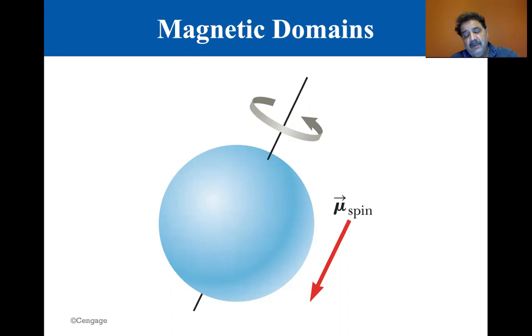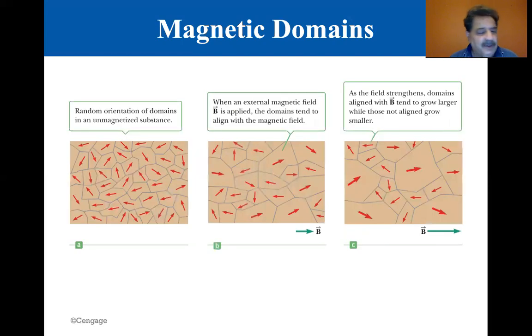but you'll get spin in one direction, you get spin in the other direction, so it does kind of cancel. But in some materials such as iron, cobalt, and nickel, the magnetic fields produced by the electron spins don't cancel completely, and we call these ferromagnetic materials.